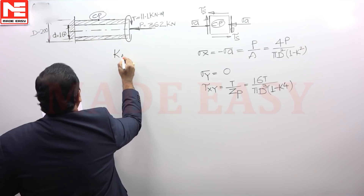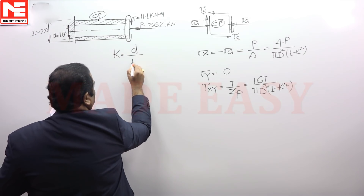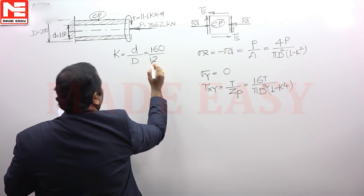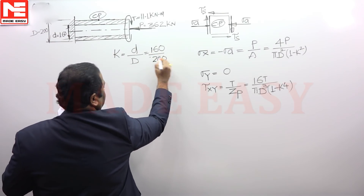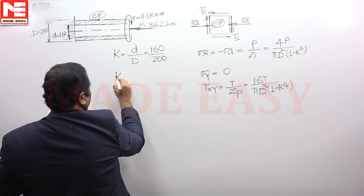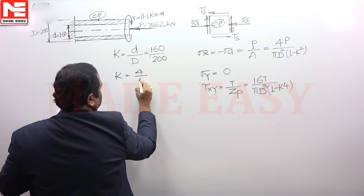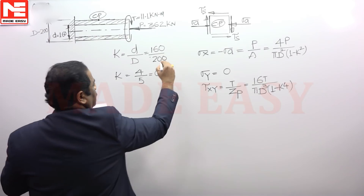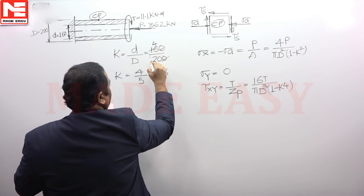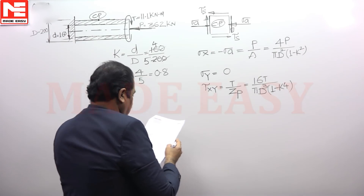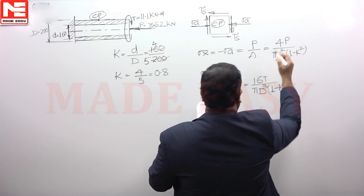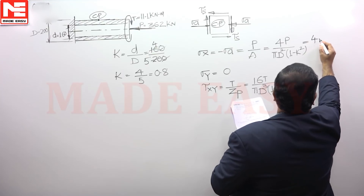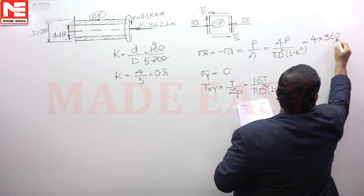For the given case, k is the diameter ratio — small d to capital D. The inner diameter is 160 mm and the outer diameter is 200 mm, giving a diameter ratio k equal to 0.8.